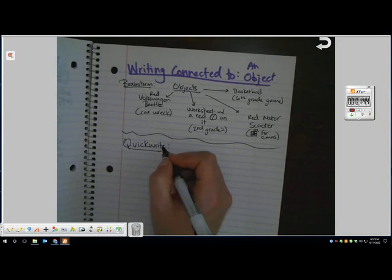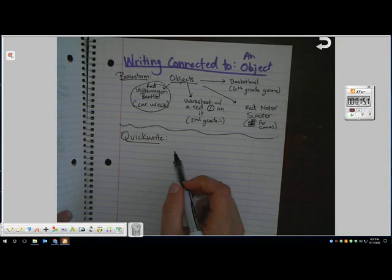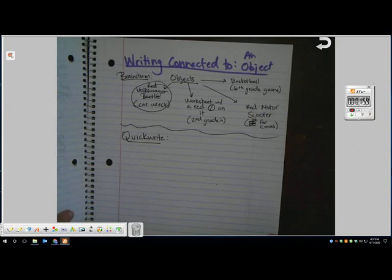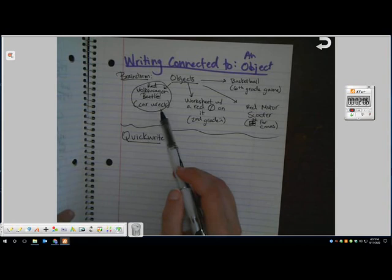I need to pick one of these. I'm going to pick the red Volkswagen Beetle. Reminder about quick writes: You do not need to worry about spelling. You don't need to worry about grammar. You don't need to worry about messy handwriting. You can abbreviate anything you want to, and you can even sketch in some of the stuff too. The idea is you want to give yourself about five minutes to get everything you think about this memory down on paper.